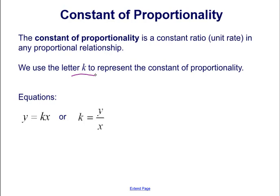So we will see it in equations such as Y equals KX. So K, that constant of proportionality, will be the coefficient of X and it's what is multiplied with X to equal Y. Or if we solve for K, if we solve for the constant of proportionality, we get that K equals the ratio of Y over X.